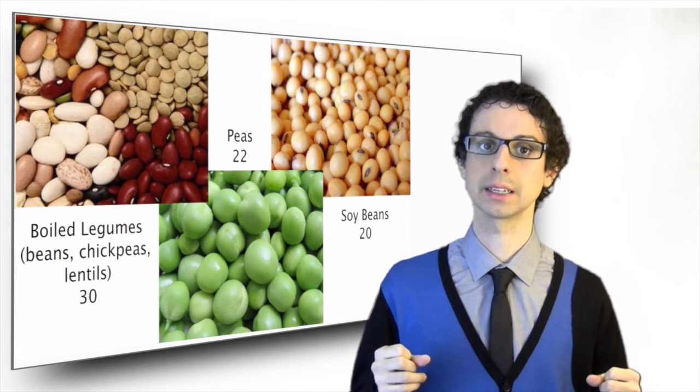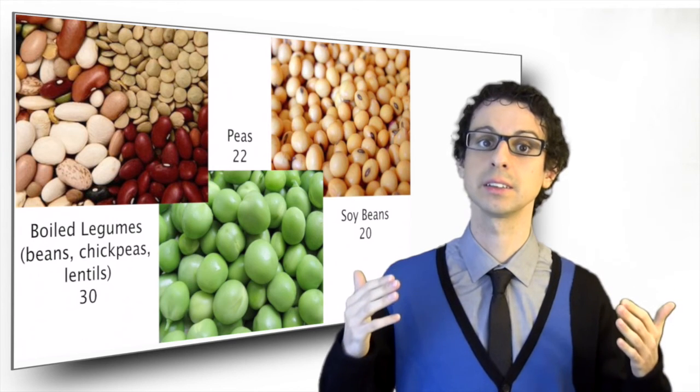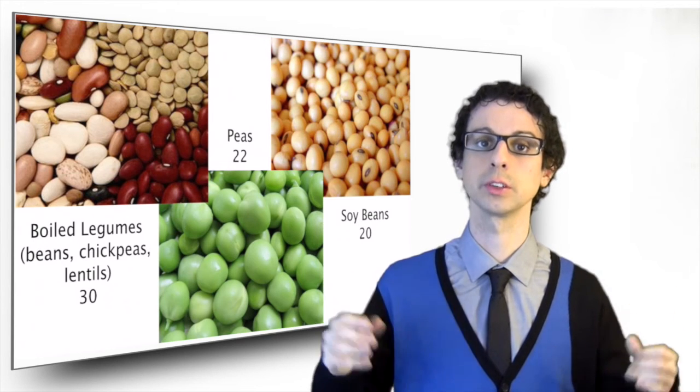Legumes have a low glycemic index between 20 and 30, but of course it increases if they are overcooked or turned into purees.